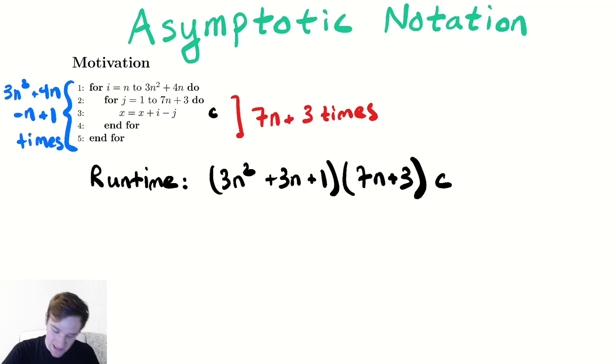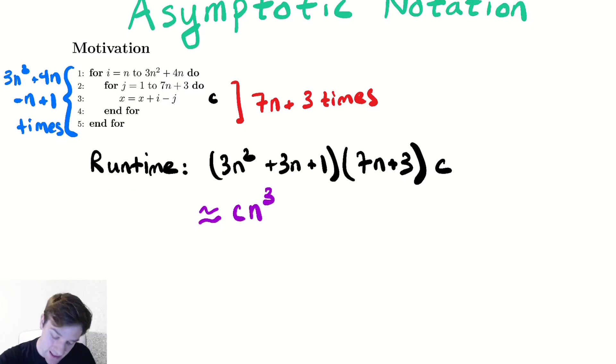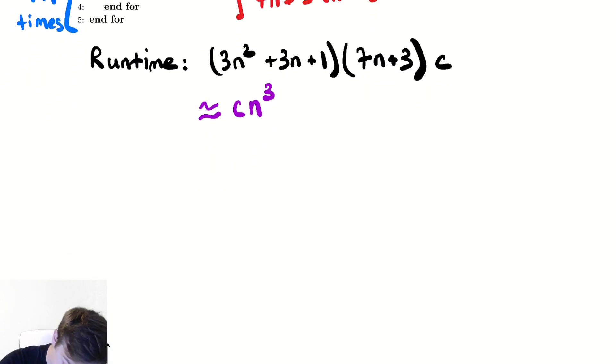What we want to say is that this is something like the most important term. The most important term would be the one that grows the quickest. So we want to say that's something like Cn cubed. That's not really a good notation because we don't have a good sense of what does it mean to say kind of like. So what we're going to say instead is that this runtime is in theta of n cubed. We'll discuss what that notation means later, but let's discuss intuitively what we mean by this.